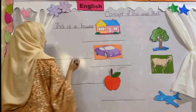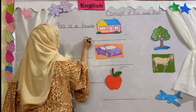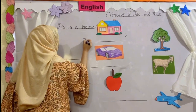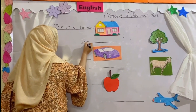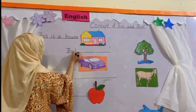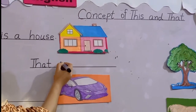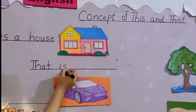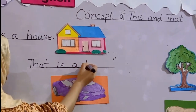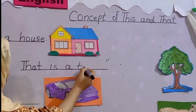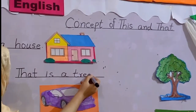When things are far from us, we say 'that.' For example, that is a tree — 'that is a tree.'